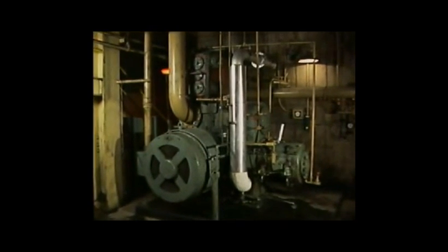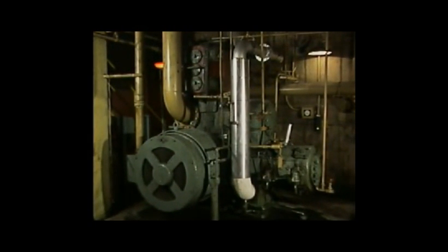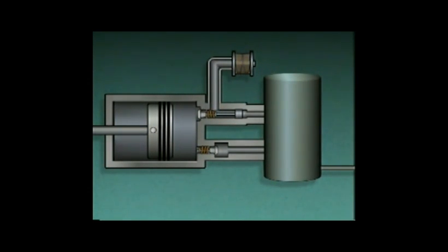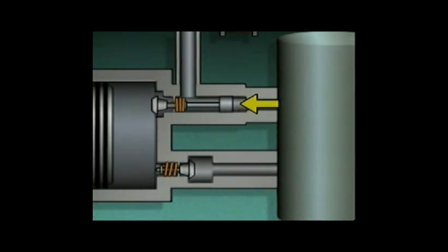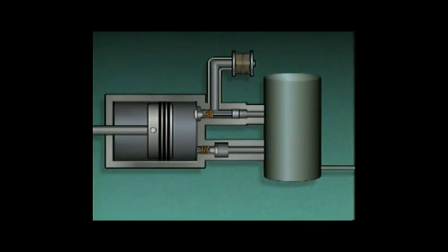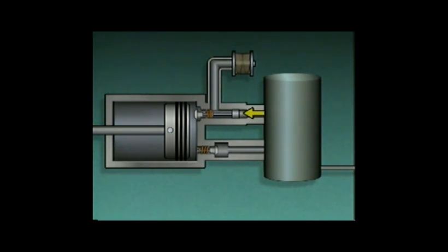Large compressors tend to be more efficient if they operate continually, so one device commonly used to prevent over-pressurizing the receiver is an inlet valve unloader. The unloader consists of a piston and a connecting rod connected to the inlet valve on the compressor, with a pressure sensing line connected from the unloader to the receiver. Gas from the receiver fills the pressure sensing line, and as receiver pressure increases, it moves the piston and connecting rod and opens the compressor's inlet valve. With the inlet valve open, gas entering the compressor is pushed back out and is not compressed. When pressure in the receiver decreases, the pressure on the unloader piston also decreases, allowing the inlet valve to move normally and the compressor to resume normal operation.